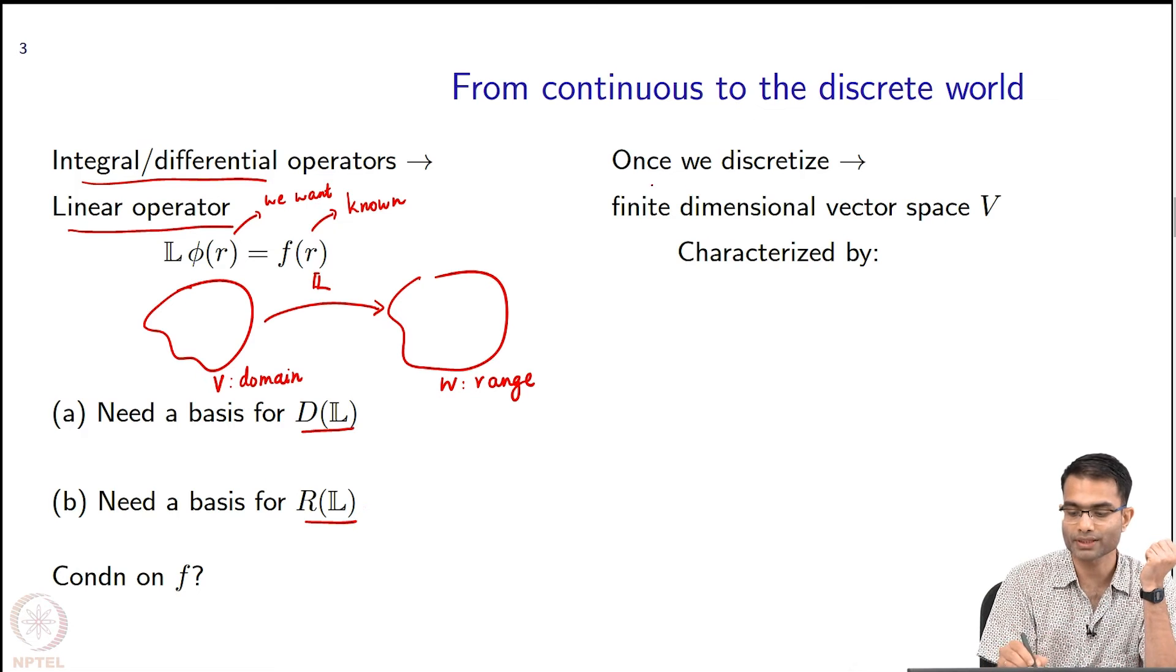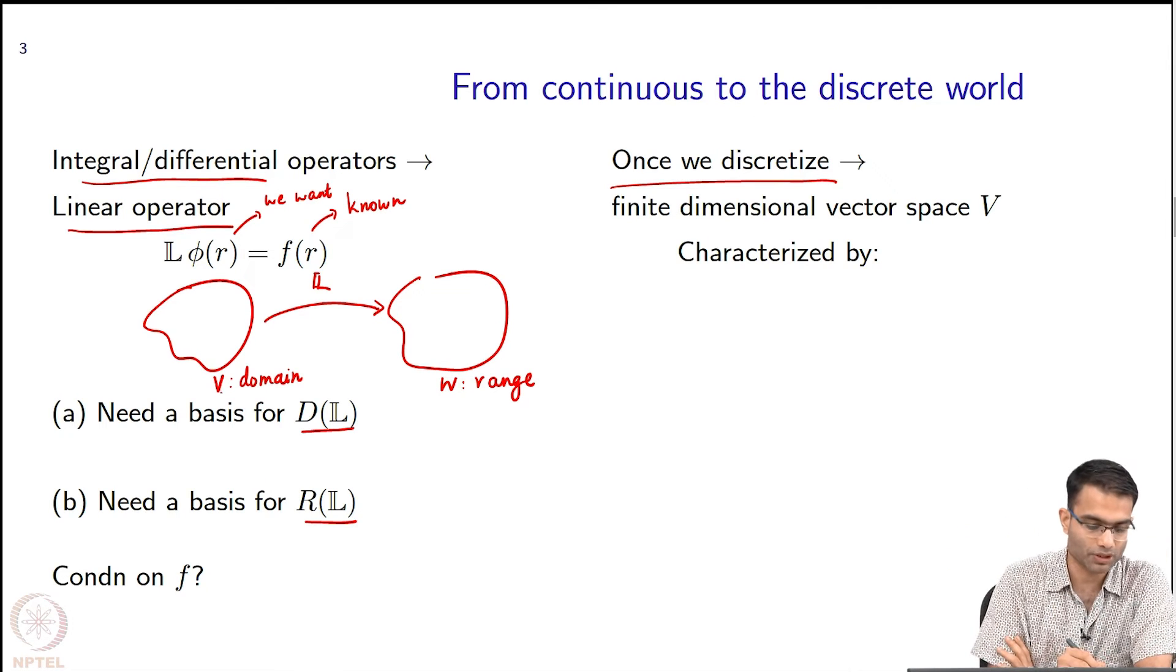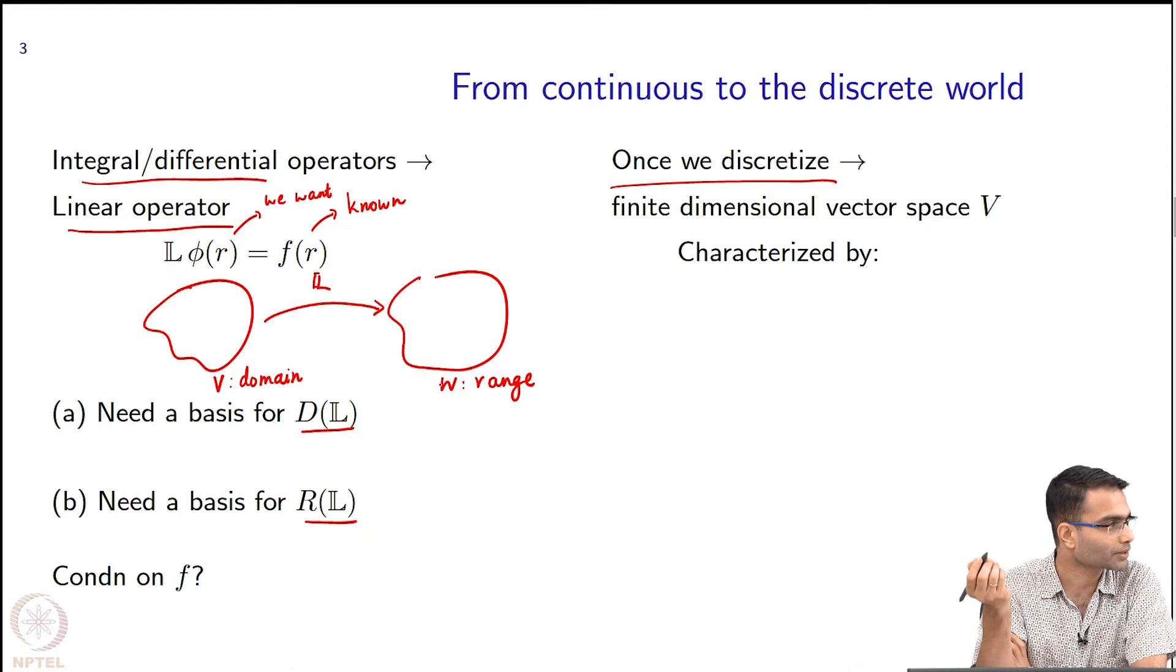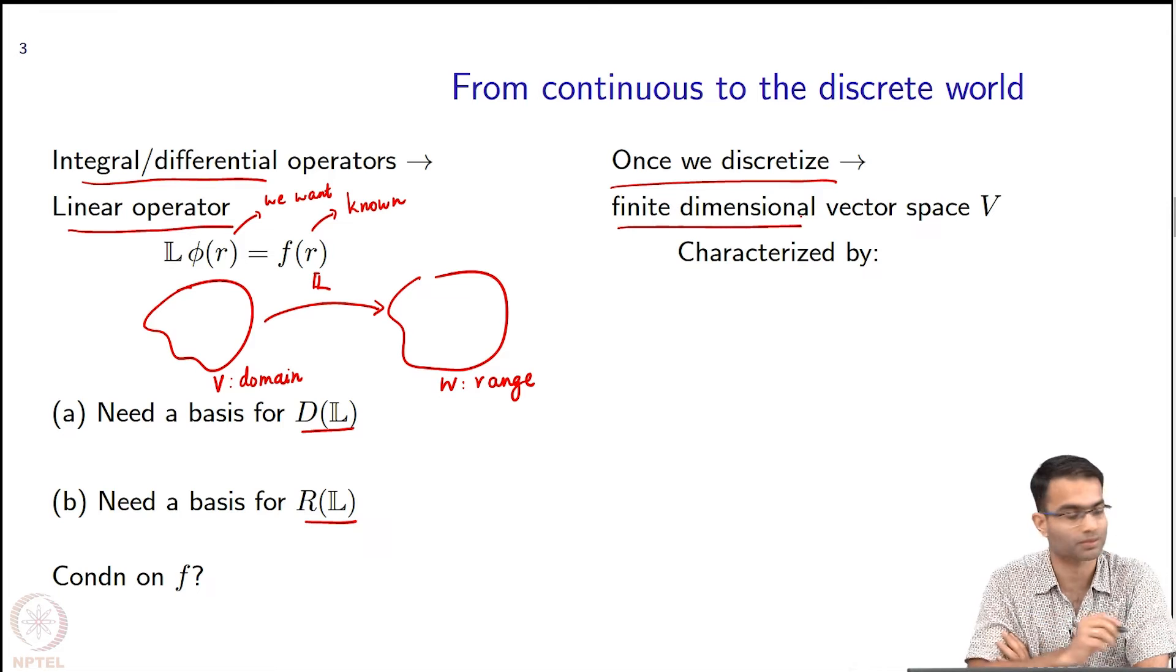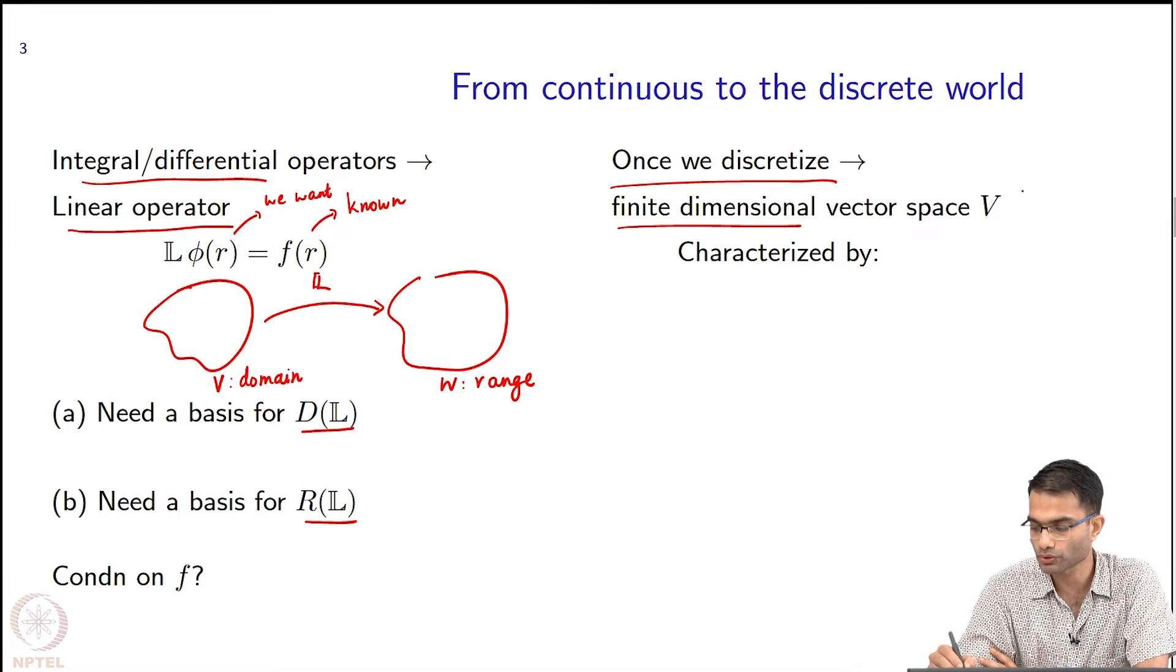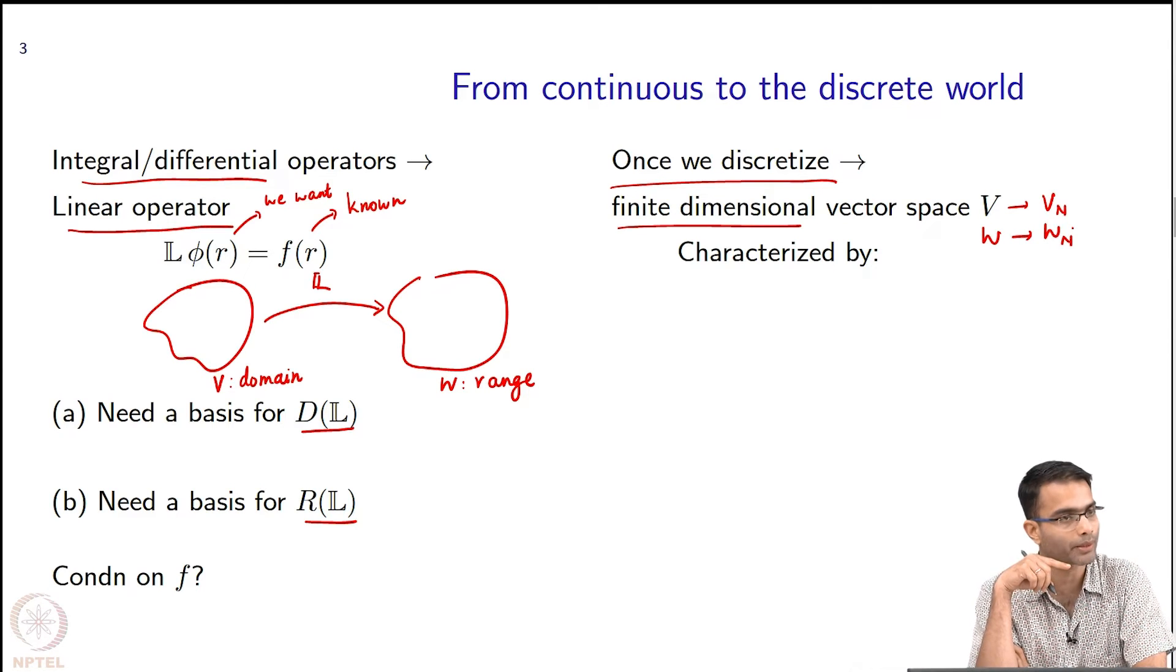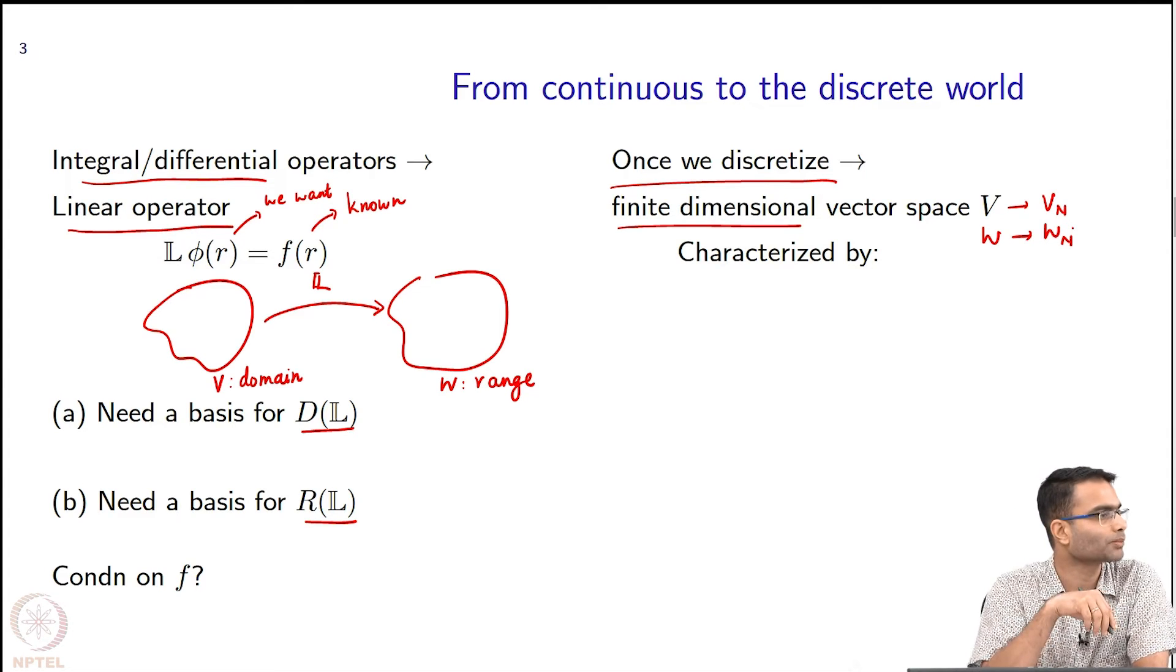Now is when we go to the discrete world. So when we discretize this continuous space over here, V and W, it gets discretized also. So it becomes a finite dimensional vector space. It becomes V_n, let us call it, and similarly W becomes W_n. So these are finite dimensional vector spaces.